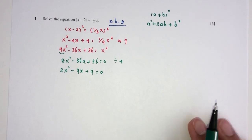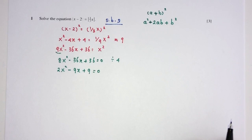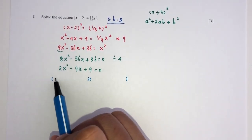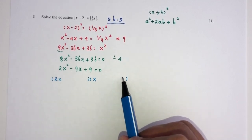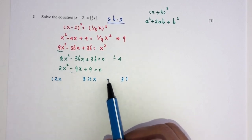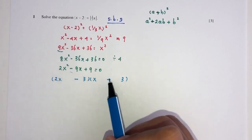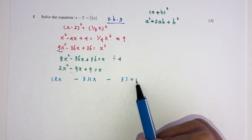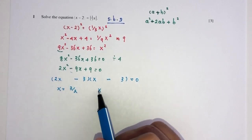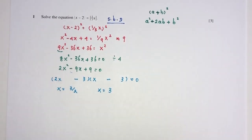So now we have a simple quadratic equation. We can solve using the quadratic formula or by factorization. Let's factorize: 2x squared comes from 2x times x. 9 is 3 times 3. To get minus 9x, we need minus 6x and minus 3x — so (2x minus 3)(x minus 3). Therefore x equals 3 over 2, or x equals 3. These are the answers for question number 1.